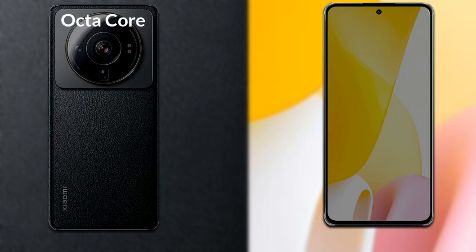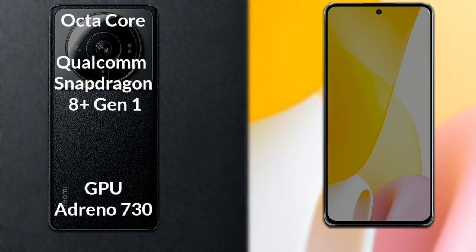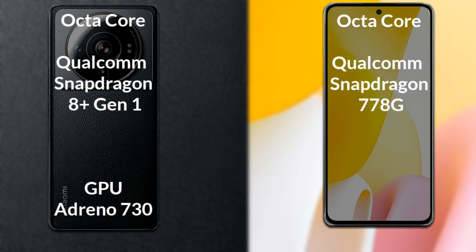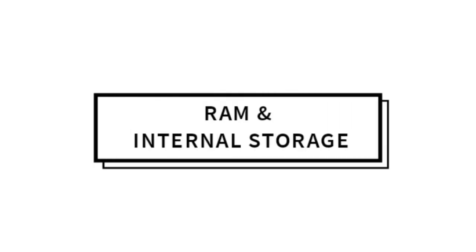Talking about both phones' processor and GPU: Xiaomi 12S Ultra has an octa-core Qualcomm Snapdragon 8 Gen 1 Plus processor with Adreno 730 GPU. Xiaomi 12 Lite has an octa-core Qualcomm Snapdragon 778G processor with Adreno 642L GPU.